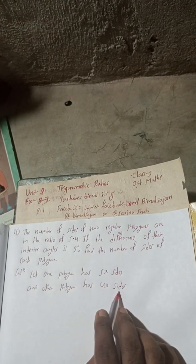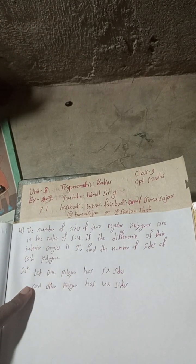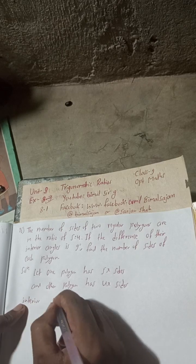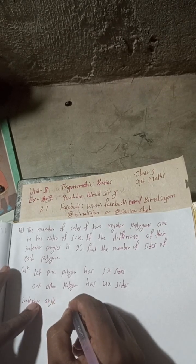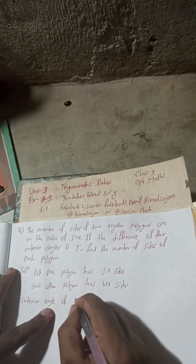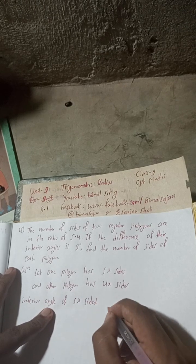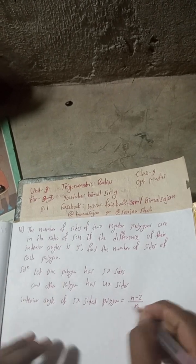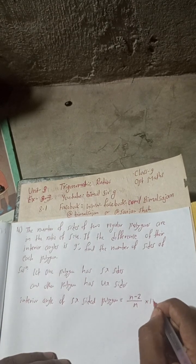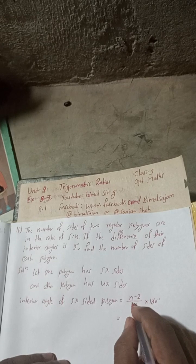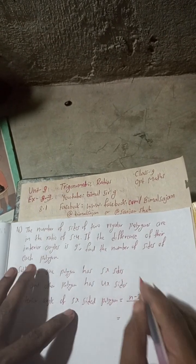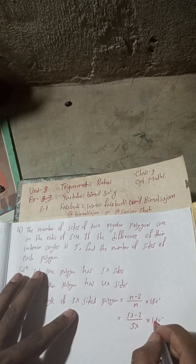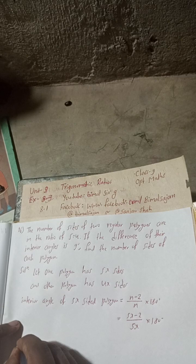If the difference of their interior angles — so we need to find the interior angle. The formula for the interior angle of a regular polygon is (n − 2)/n × 180°. For the first polygon with 5x sides, the interior angle equals (5x − 2) / 5x × 180°.